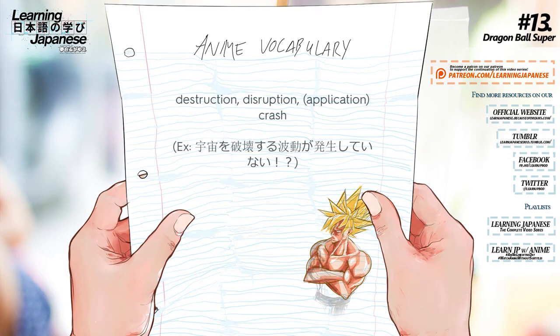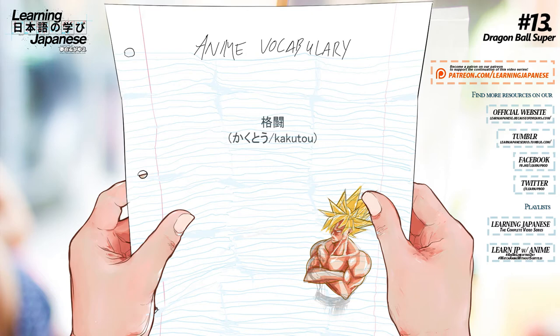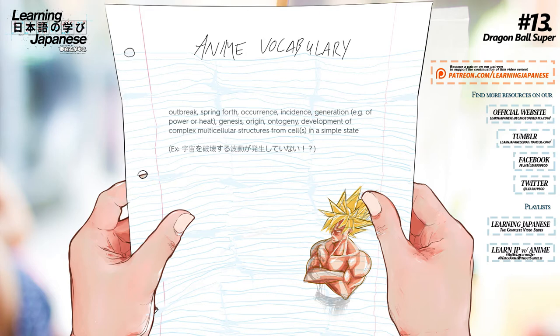破壊 — Destruction, Disruption, Crash. 格闘. 発生 — Outbreak, Spring forth, occurrence, incidence, generation, genesis, origin, ontogeny; development of complex multicellular structures from a cell in a simple state.